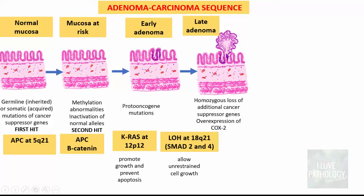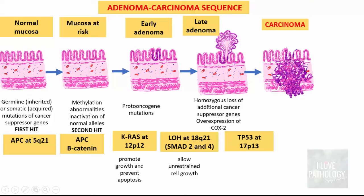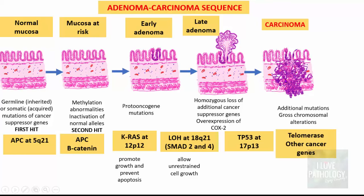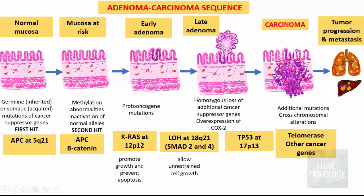In late adenomatous cells, when there is TP53 mutation — located on the short arm of chromosome 17 — that results in the development of carcinoma. Further accumulation of mutations including chromosomal alterations, expression of telomerase, and other cancer gene mutations leads to progression and metastasis. This is the classical adenoma-carcinoma sequence. Remember the genes: APC gene, KRAS gene, TP53 gene, and telomerase ones which result in tumor progression. A mnemonic to remember is AK53 — A for APC gene, K for KRAS, and TP53 in the final stage of development of carcinoma.